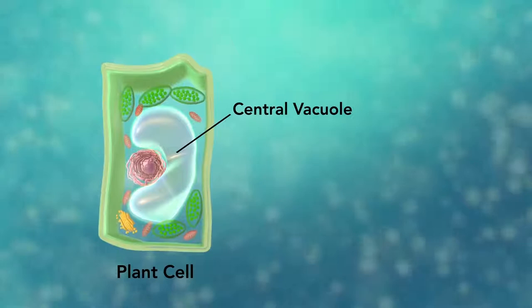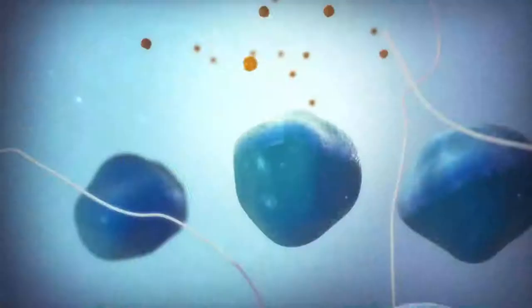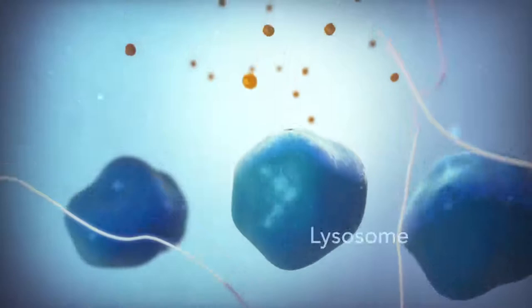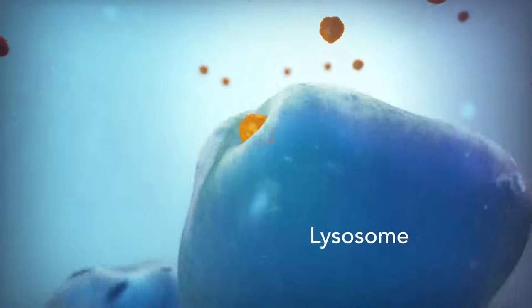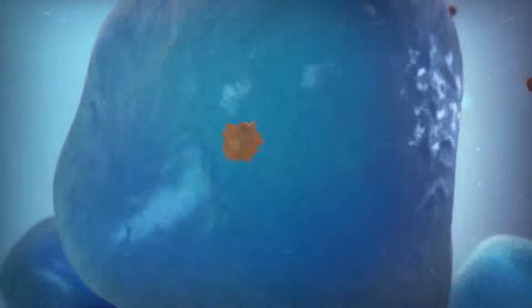Going back to the animal cell, you will see an organelle called a lysosome. Lysosomes are the garbage collectors that take in damaged or worn-out cell parts. They are filled with enzymes that break down this cellular debris.